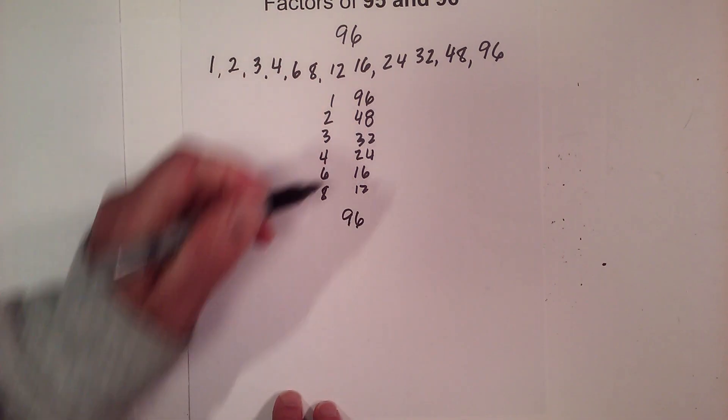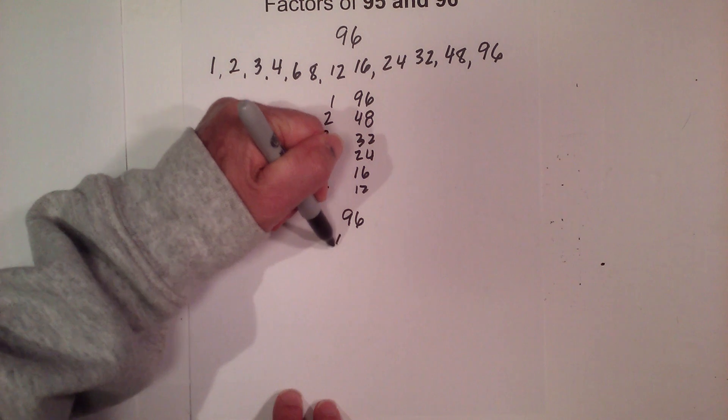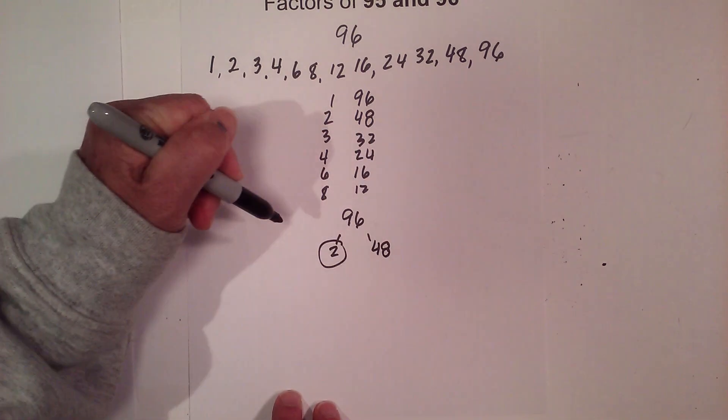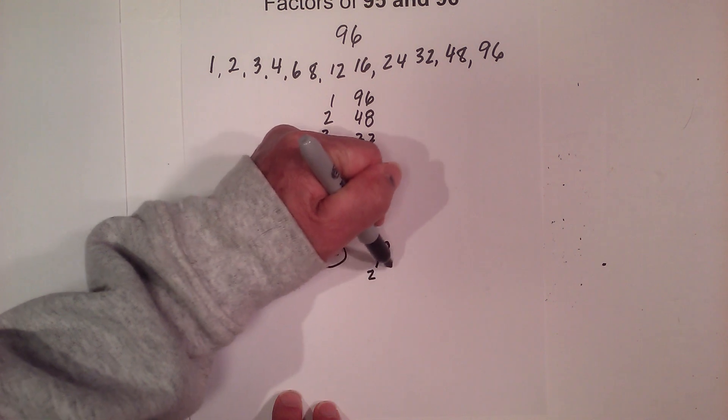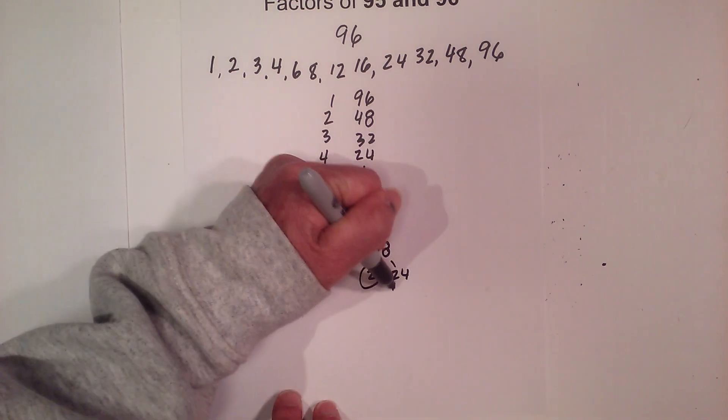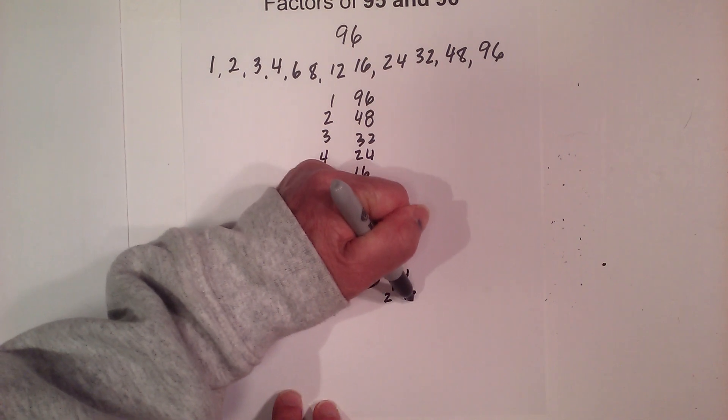96, we can easily do 2 times 48. Circle the 2 because it is prime. And now 2 times 24. Circle the 2 because it is prime. And then 2 times 12.